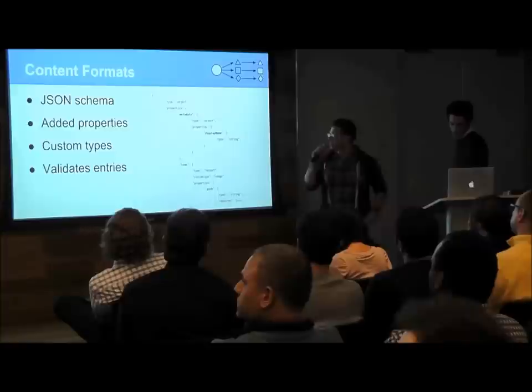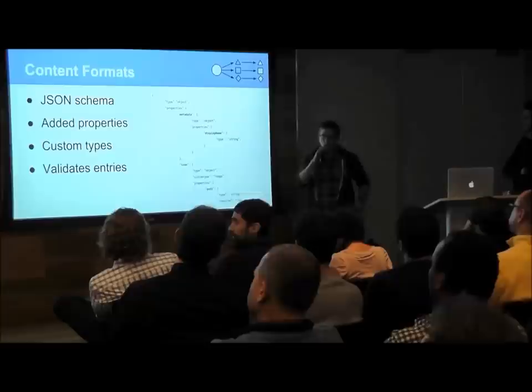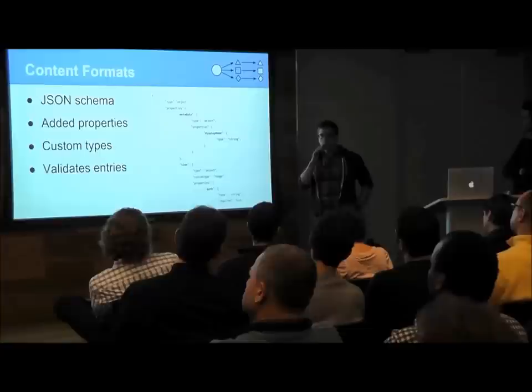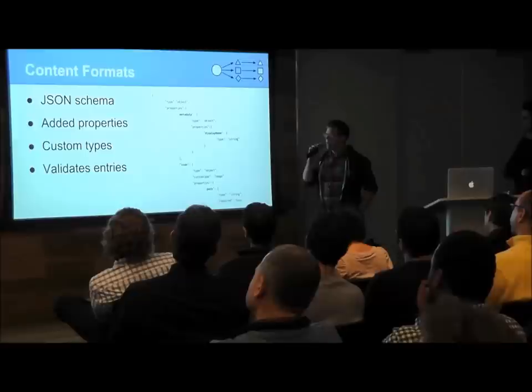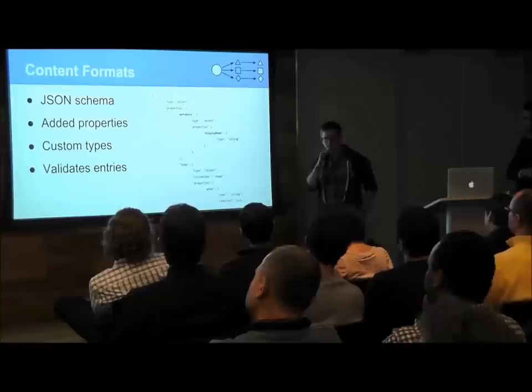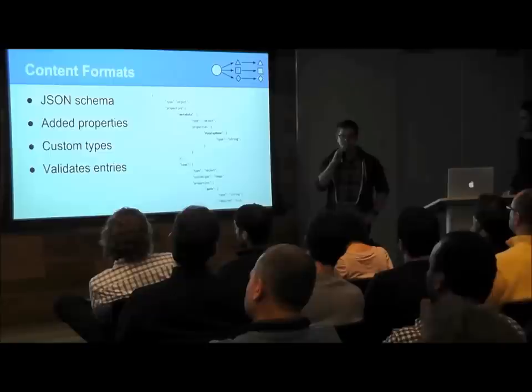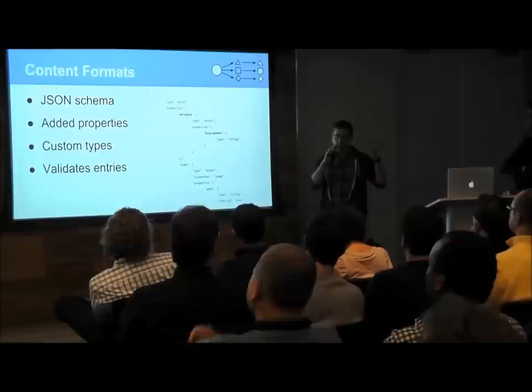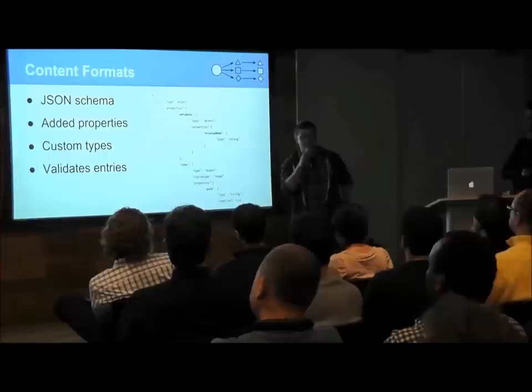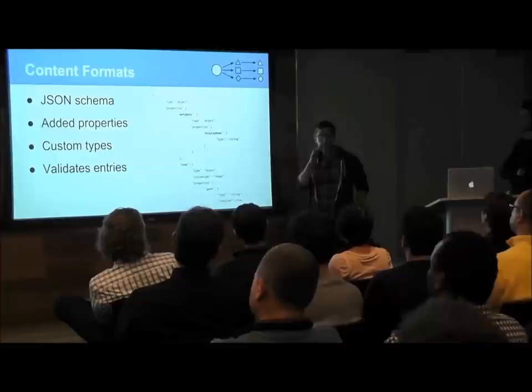Content formats define exactly how a content entry is structured — something like a sticker pack, effect pack, or frame pack. They are JSON schemas, a specification for JSON that's gaining traction, defining the type of each field and the structure of a JSON document. We added a couple of properties and custom types to handle things like images that need to be uploaded or fields not standard to JSON schema. The purpose is to validate entries before they're inserted into MongoDB.